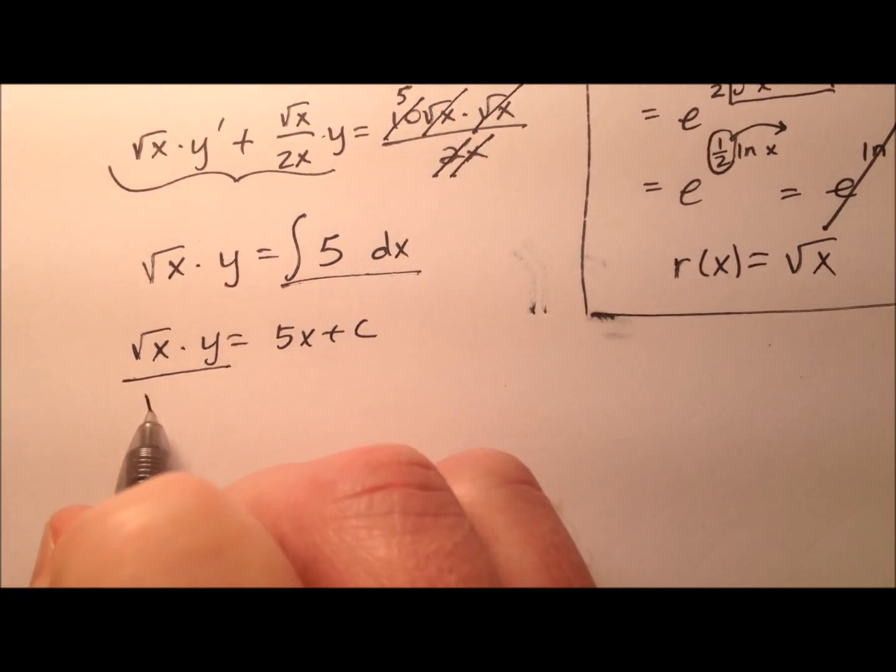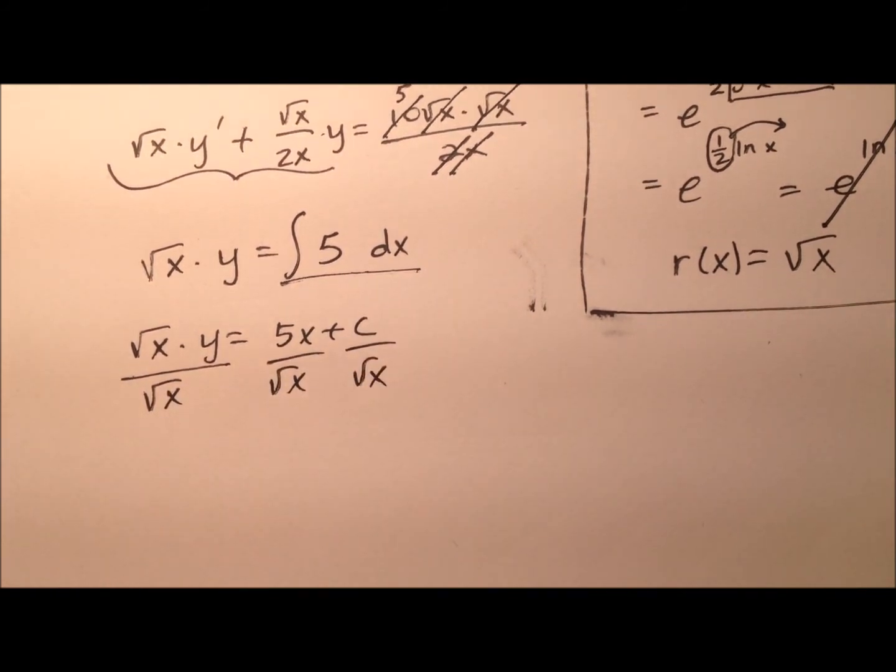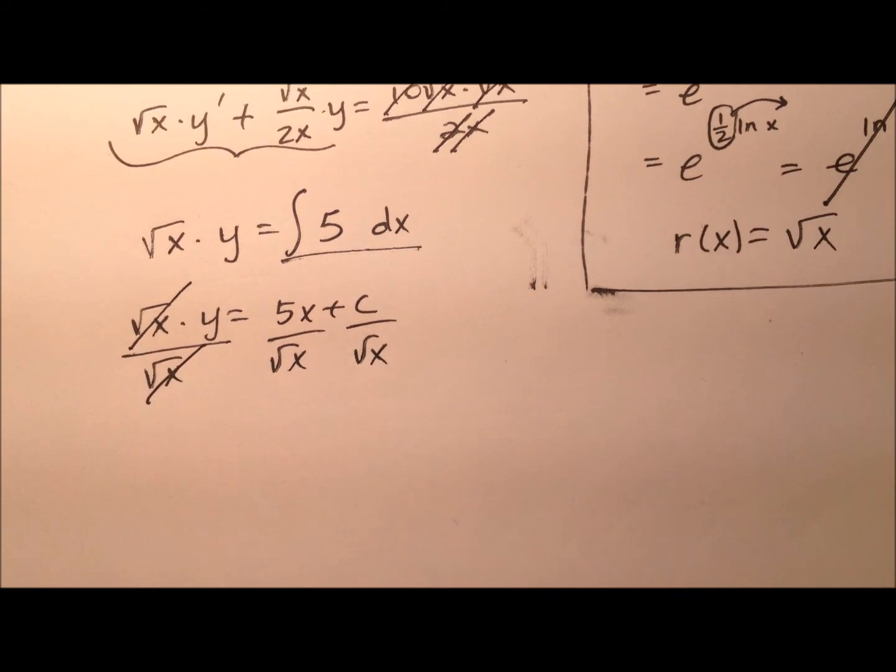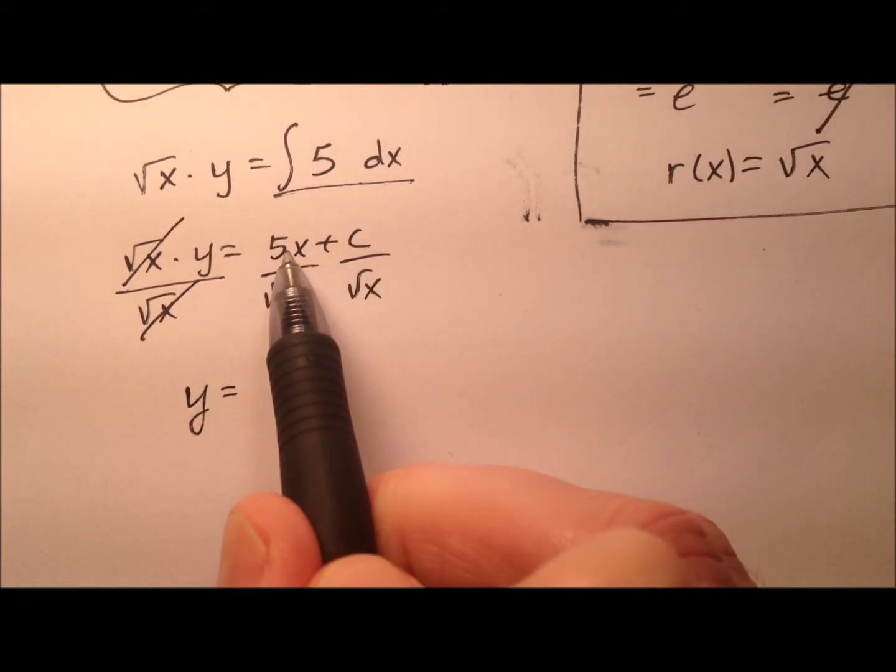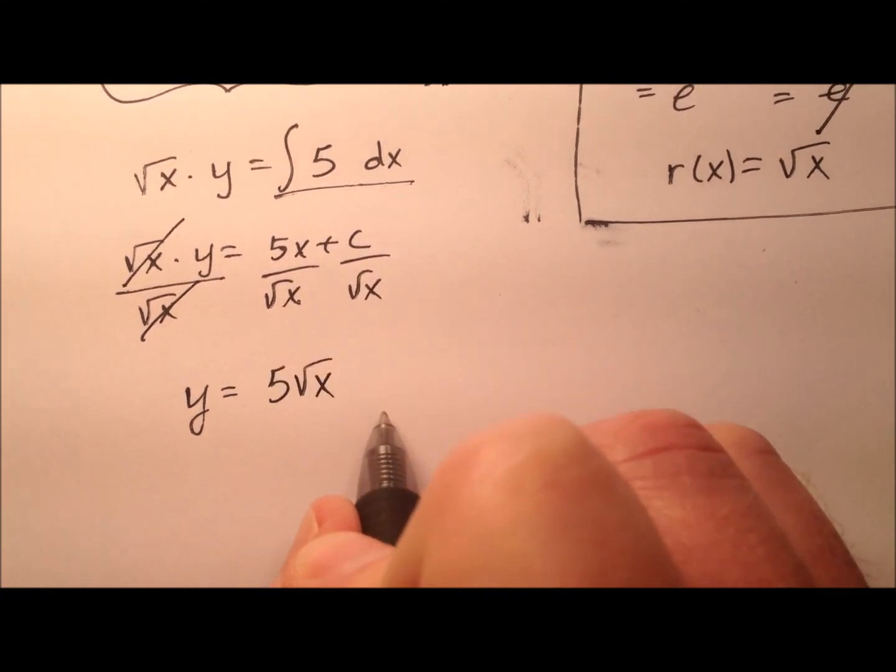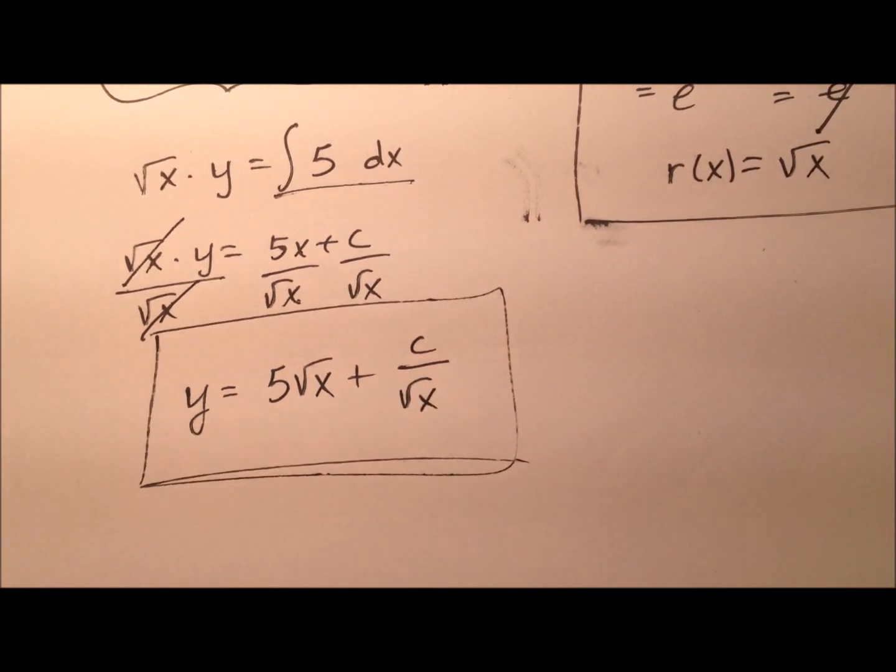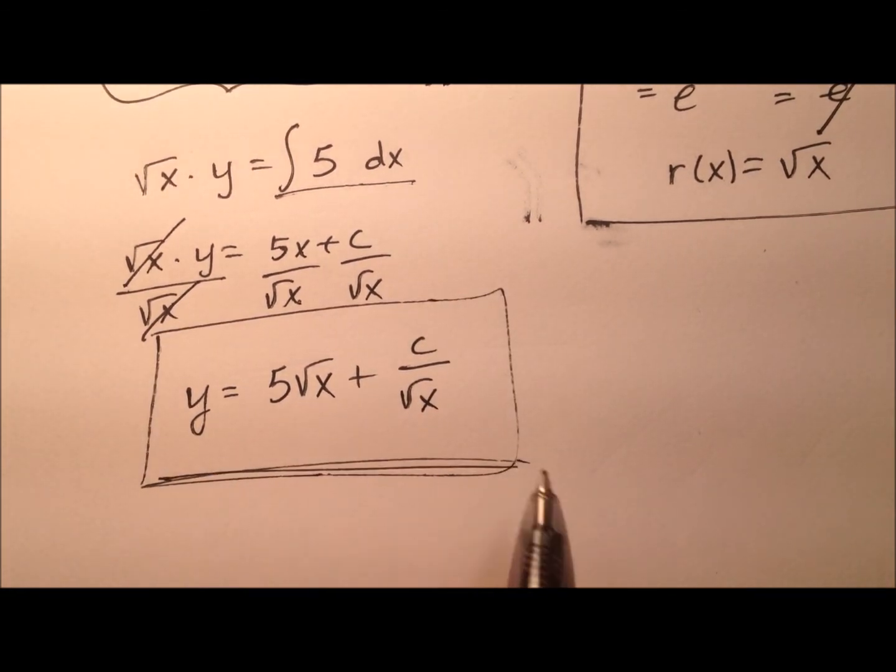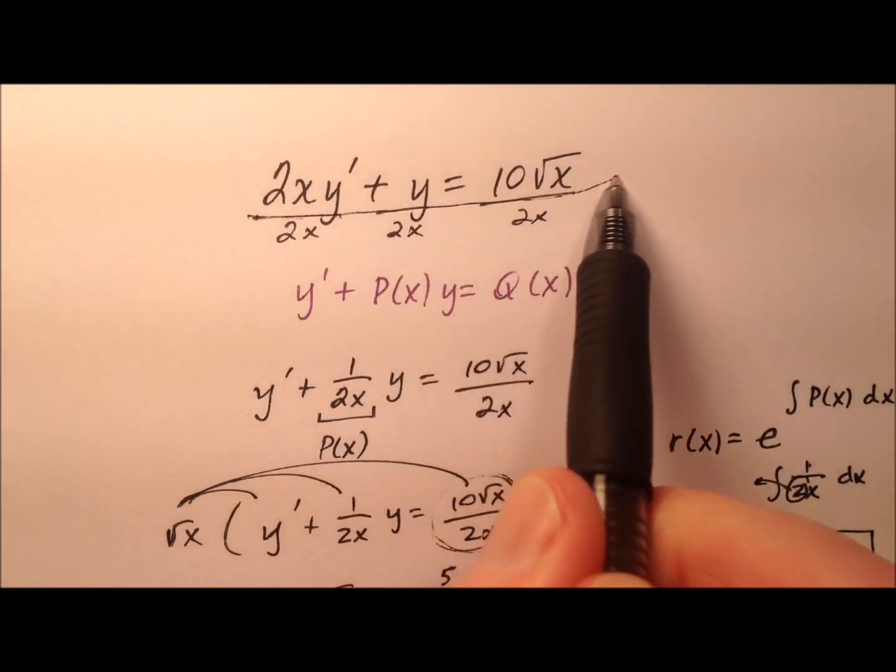So solving for y, I'll divide every term by the square root of x. So these will cancel. So y now equals, let's see, 5x over the square root of x will be 5 times the square root of x plus c over the square root of x. So here is the general solution for my original differential equation right here.